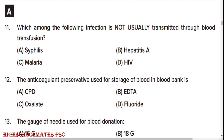Which among the following infection is not usually transmitted through blood transfusion? Hepatitis A. Blood transfusion commonly transmits syphilis, malaria, and HIV.